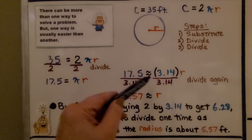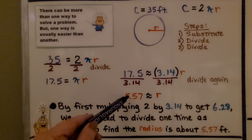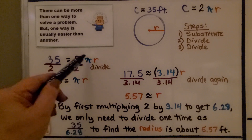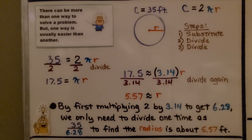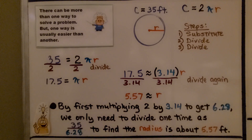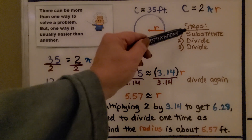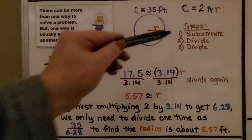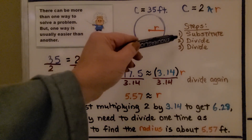We divide both sides by 3.14 and get that the radius is about 5 and 57 hundredths feet. Comparing the two methods: in the first method, we multiplied 2 by 3.14 to get 6.28, then divided once. In the second method, we substituted, divided by 2, then divided again by 3.14. The first method — substituting then dividing by 6.28 — required substituting, multiplying, then dividing. The second required substituting, then dividing twice.